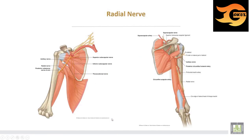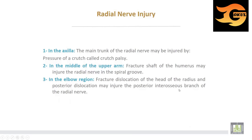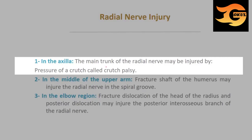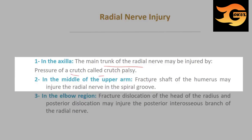The radial nerve starts from the posterior cord of the brachial plexus, passes through the axilla, and is then directed through the spiral groove posterior to the humerus. Radial nerve injury may occur in the axilla, or the main trunk may be injured by pressure of a crutch — called crutch palsy — in the middle of the upper arm, or by fracture of the shaft of the humerus injuring the radial nerve in the spiral groove.